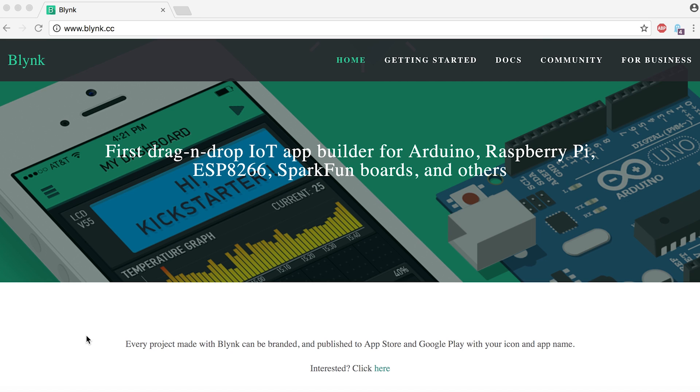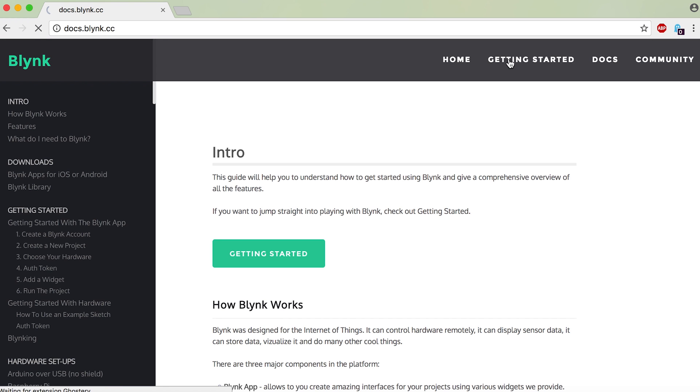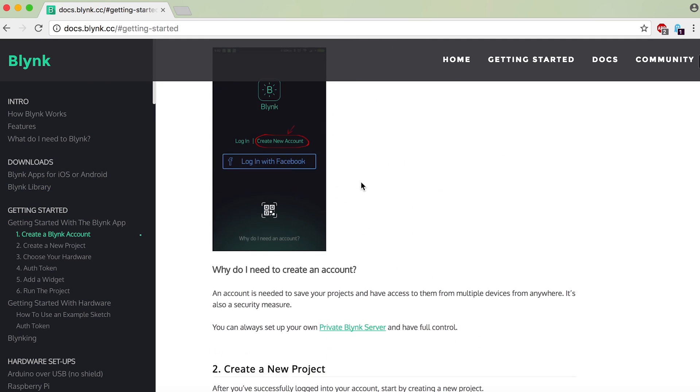Like our smartphone connected door lock project, we're going to use Blink for this project. We're using Blink just because it's easy to set up and you don't have to have any prior knowledge of Android app development or iOS app development. They have some nice tutorials on their docs page and there's even a getting started guide if you've never used it before.